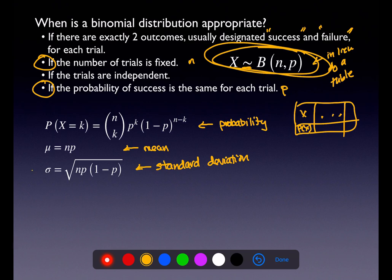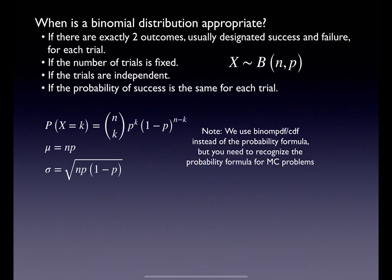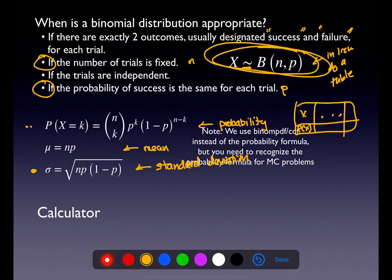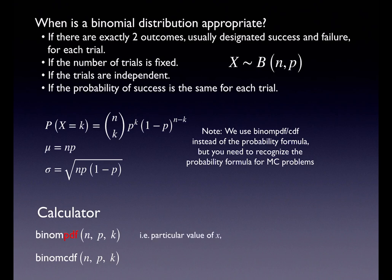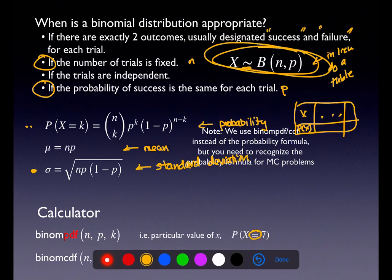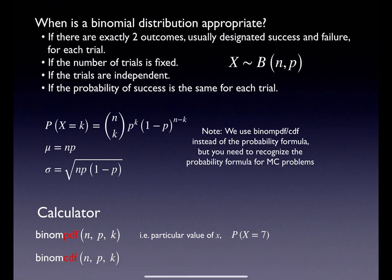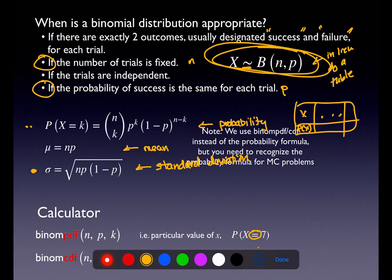All of this is listed in your trait table, so make sure you're using that. We will use binomial PDF and CDF instead of the formula, but make sure you understand the formula well enough to recognize it in a multiple choice question. We picked up two calculator commands in this chapter: binomial PDF and binomial CDF. Use binomial PDF when you have an equal sign — for a particular value of x.